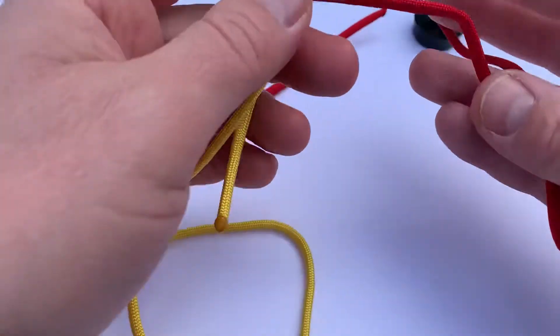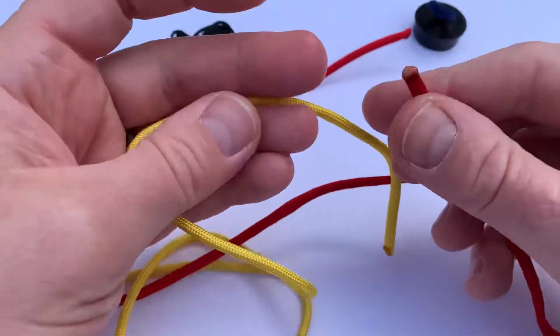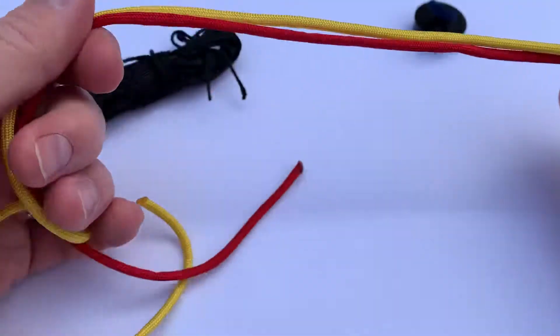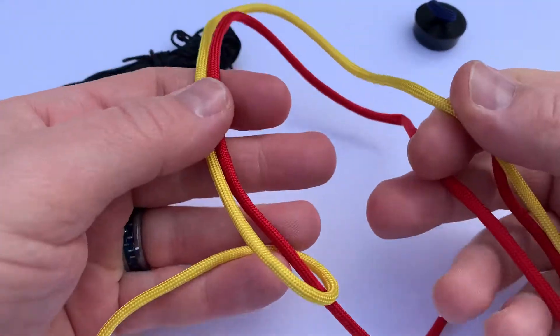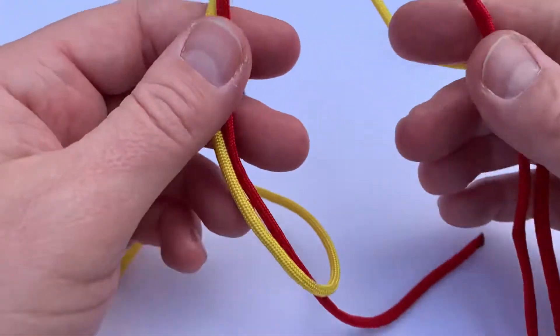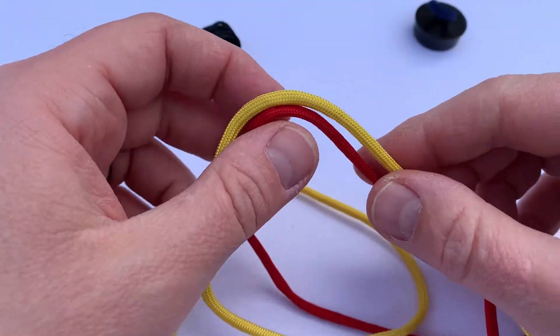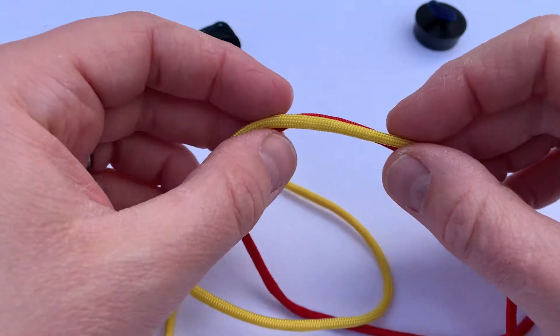But most importantly and more fun for kids and adults alike is using these two short pieces of paracord for practicing your knots. A lot of people have different booklets, little pamphlets, or use their phone to figure out which knots to use.